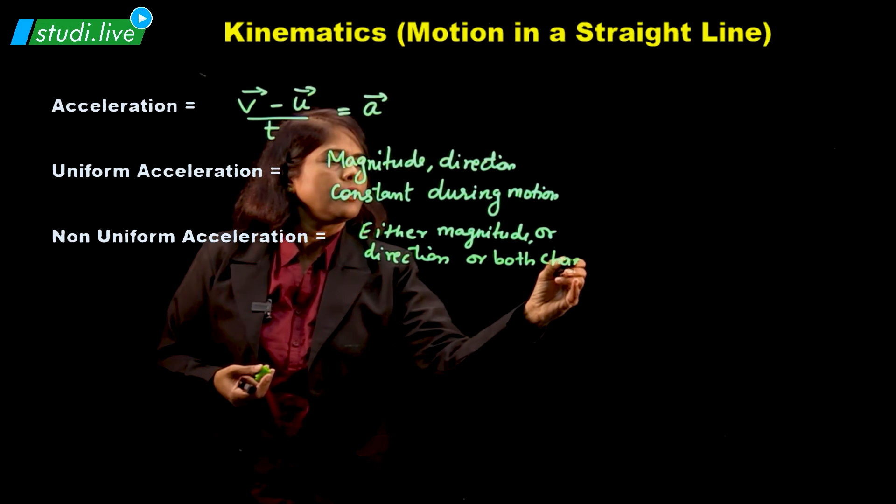So we write it as: limit as delta t tends to 0 of delta s upon delta t, which is a vector. Time is very close to 0 — change in displacement upon change in time. The same thing we can also write as ds upon dt in terms of the derivative. So this much you should know about velocity in detail.